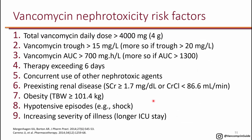There are many risk factors for nephrotoxicity. Studies found that if the total vancomycin daily dose is more than 4 grams (4,000 milligrams), patients are more likely to have nephrotoxicity. If vancomycin trough is greater than 15 — as just shown — that's also a risk factor. If the vancomycin AUC is greater than 700, that is also nephrotoxic, which is why the new guidelines target an AUC of 400 to 600 to avoid reaching 700. Also, if therapy exceeds six days.